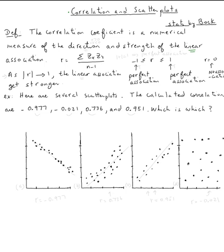How do we know the direction? If r is positive, then we know the direction is positive. If r is negative, then we know the direction is negative.